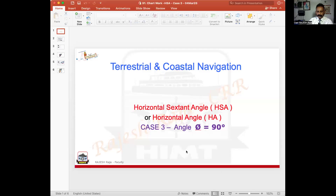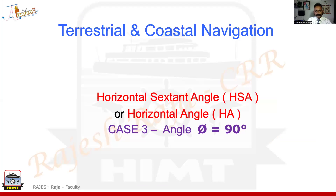Namaskar. Welcome back to Jal Prayag. I'm going to continue on the same topic we had done last week, regarding the horizontal sextant angle. We have done a couple of cases and today I'm going to do case number three — theta is equal to 90. The horizontal angle between the two lighthouses or two objects is exactly 90 degrees.